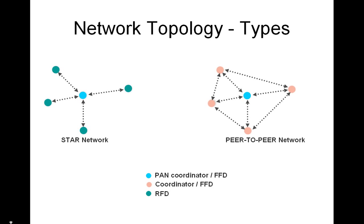The peer-to-peer topology also has a PAN coordinator; however, it differs from the star topology in that any device may communicate with any other device as long as they are in range of one another. Peer-to-peer topology allows more complex network formations such as mesh networking. Applications such as industrial control and monitoring, wireless sensor networks, asset and inventory tracking, intelligent agriculture, and security would benefit from such a topology. A peer-to-peer network can be ad-hoc, self-organizing, and self-healing, and may allow multiple hops to route messages from any device to any other device on the network.